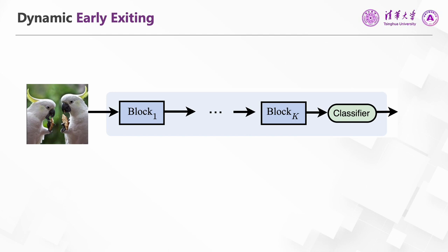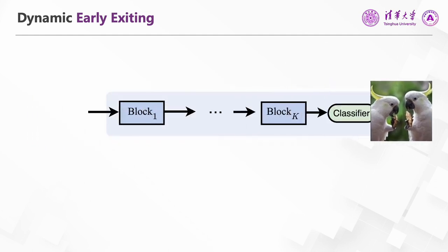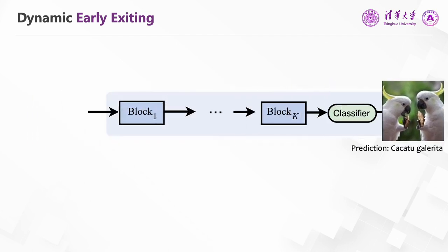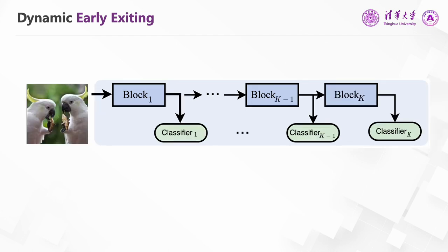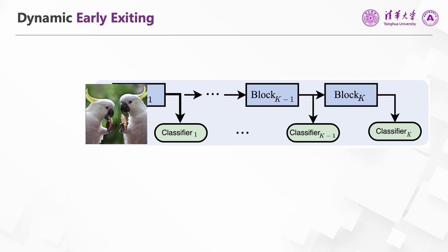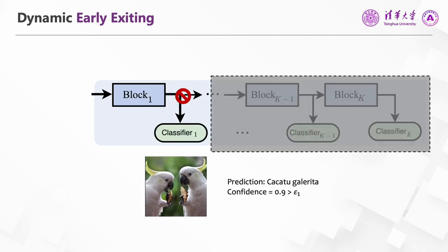Early exiting is a representative approach to achieving input-dependent computation. Specifically, to obtain the prediction of each sample, a traditional network needs to execute all its layers sequentially, and the prediction is obtained at the end of the model. In contrast, if we have a dynamic model with multiple exits located at different depths, we can have a prediction result at each exit. Once the prediction confidence at an early exit satisfies some criterion, the forward propagation could be terminated, and the execution of deeper layers will be saved. In this way, we allow the model to process easy samples with a shallow sub-network, and only hard samples will be propagated to deep layers.